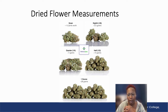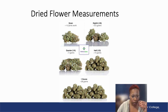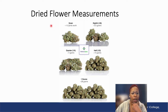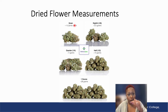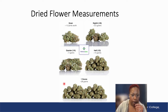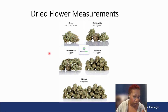It starts with a gram. Then we go to an eighth — an eighth is 3.5 grams. Typically if you buy an eighth of cannabis, it's going to be measured at 3.5 grams, and that is about one eighth of an ounce. An ounce is 28 grams.